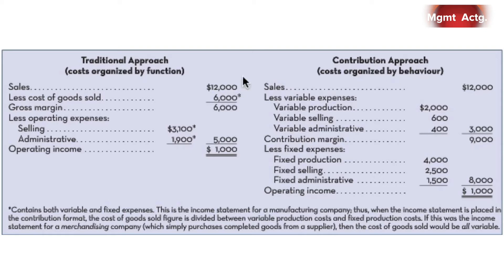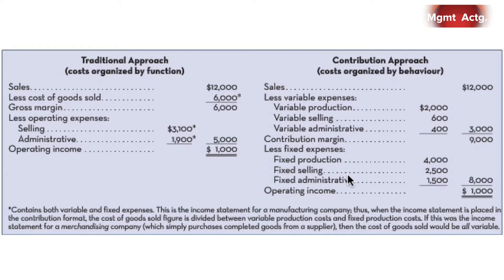Notice here, costs are organized by behavior, not function. So we have our sales, less our variable expenses — variable production, variable selling, variable administrative — to give us a contribution margin. Notice it's not a gross margin, but a contribution margin: the margin that contributes towards our fixed costs — fixed production, fixed selling, and fixed administrative expense — to give us an operating income of $1,000. Sales are the same amount under both approaches, and operating income is the same. This assumes that production equals sales.